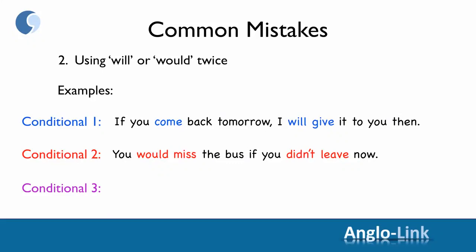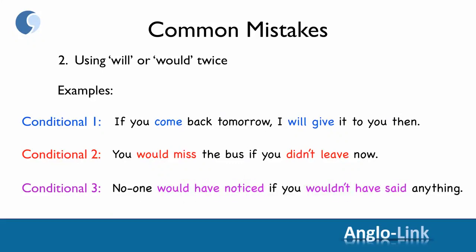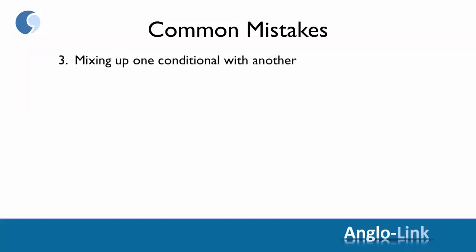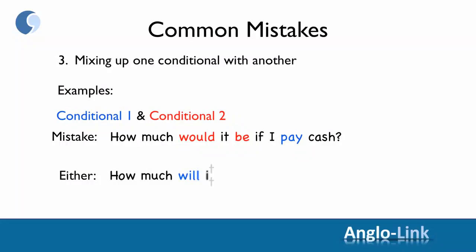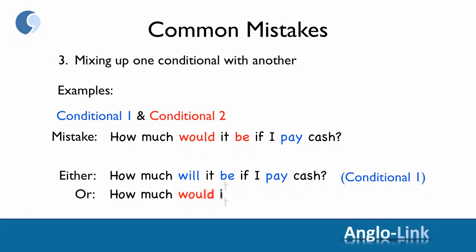In conditional three: 'No one would have noticed if you wouldn't have said anything' — no 'would' in the if clause, so 'wouldn't have' changes to 'hadn't' (past perfect): 'No one would have noticed if you hadn't said anything.' Common mistake number three is mixing up one conditional with another — for example, mixing up conditionals one and two: 'How much would it be if I pay cash?' You can either correct it to conditional one — 'How much will it be if I pay cash?' — or conditional two — 'How much would it be if I paid cash?'